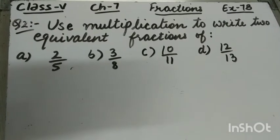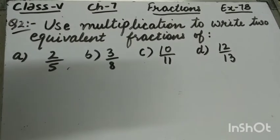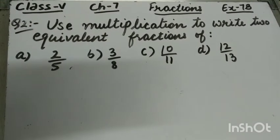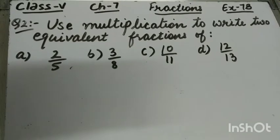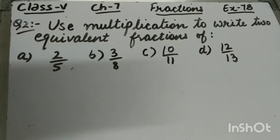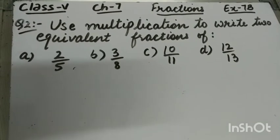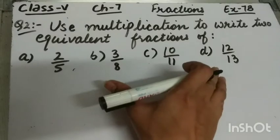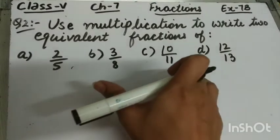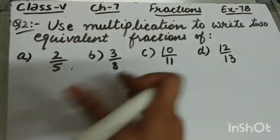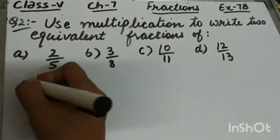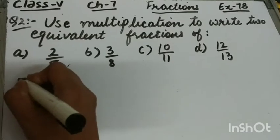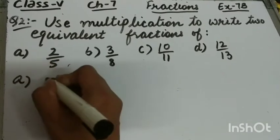Let's start question number 2 of Exercise 7B. The question is to use multiplication to write two equivalent fractions. We have to write equivalent fractions of these fractions by using multiplication.